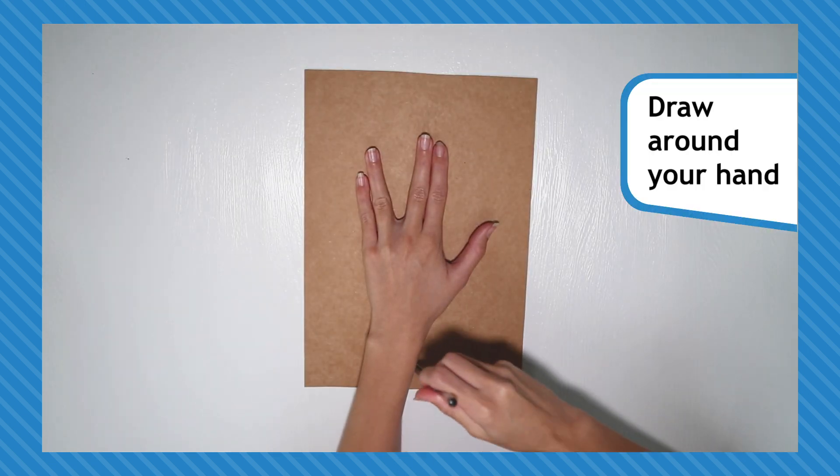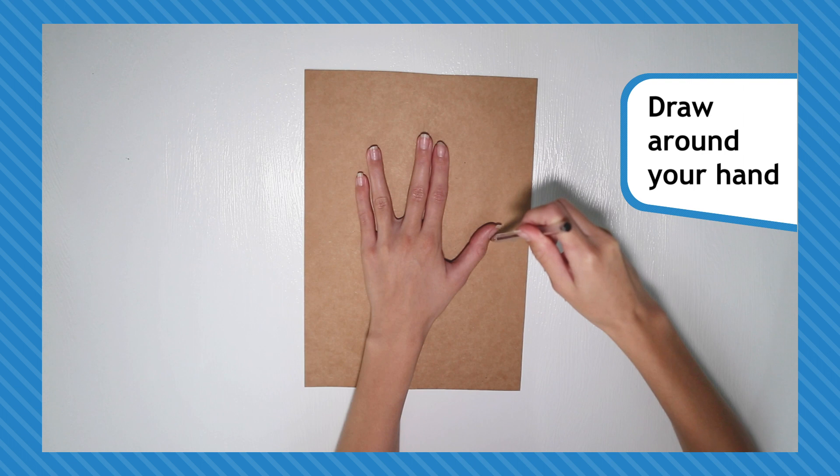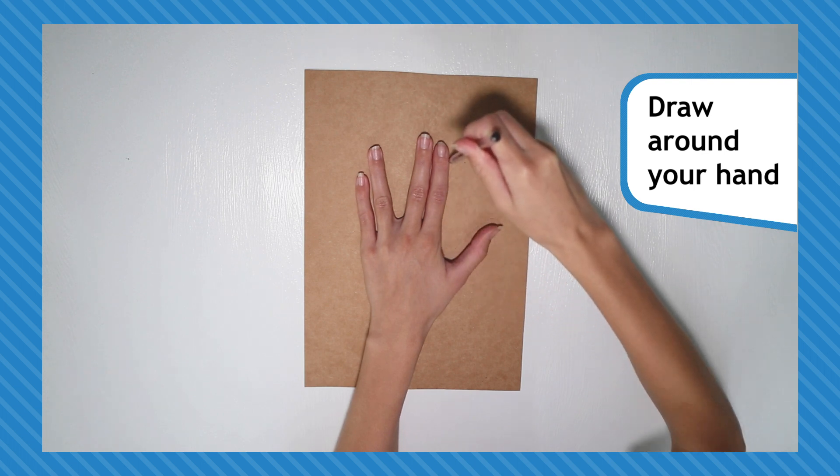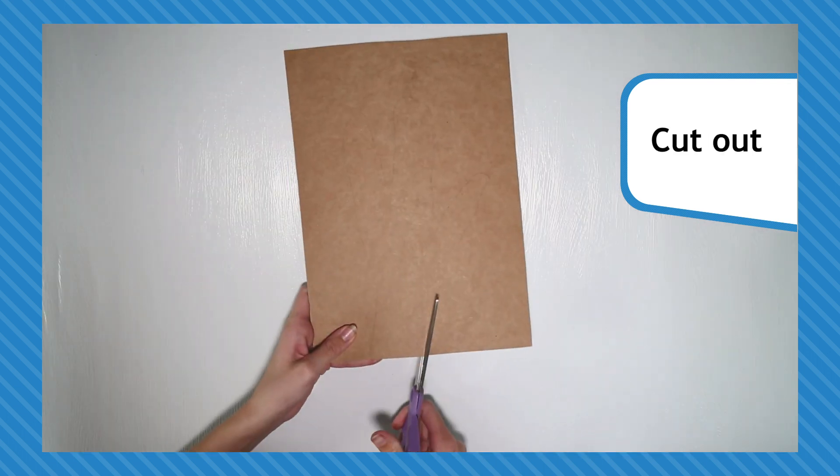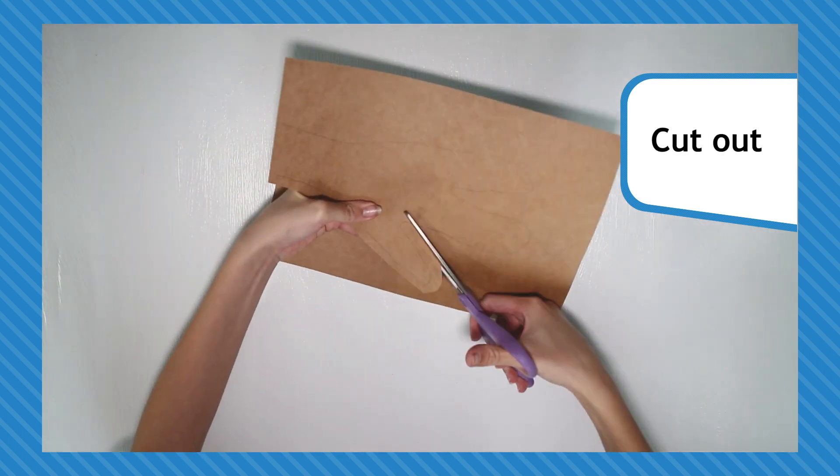Put your fingers together so you have two big fingers and a thumb. Take your card and draw around one of your hands including your wrist. Cut out the shape slightly larger than the lines.